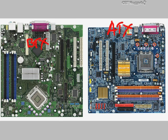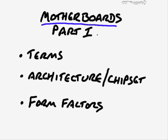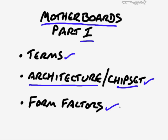In this nugget we discussed motherboards, Part 1. We started off by taking a look at a few different terms for motherboards. Then we took a look at the architecture of motherboards — things such as the North Bridge, South Bridge, the Memory Controller Hub, the I/O Controller Hub, and the fact that the North Bridge has been integrated into Intel processors in current architectures. We still have something that equates to the South Bridge, now called the Platform Controller Hub or PCH. Then we took a look at form factors: ATX, micro ATX, NLX, and several others. In the next nugget, we'll address the ATX form factor in more detail and how to work with the motherboard.